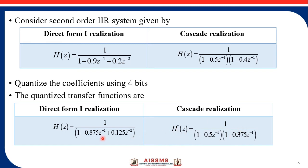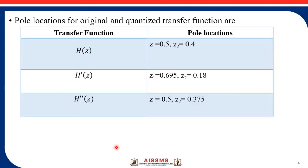Now we are going to take the inverse z-transform of both the quantized transfer functions, and from the inverse z-transform we are going to find out the roots of the denominator — that means we are going to find out the poles of the transfer function. The pole locations for the original and the quantized transfer functions: H(z) is the original transfer function and its poles are at 0.5 and 0.4, meaning they are inside the unit circle.